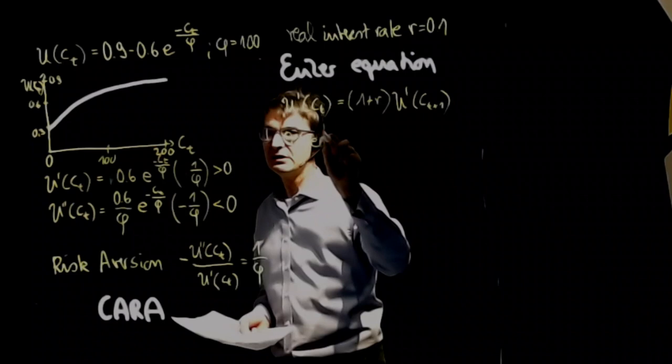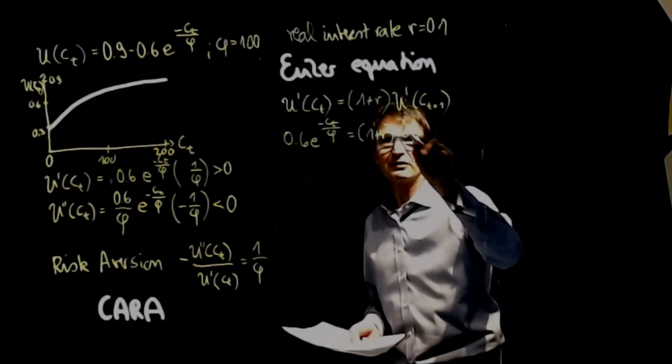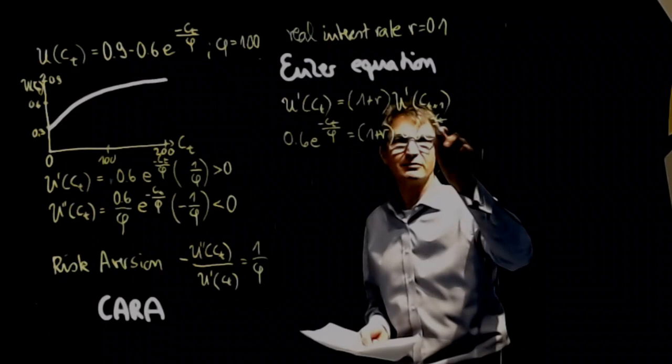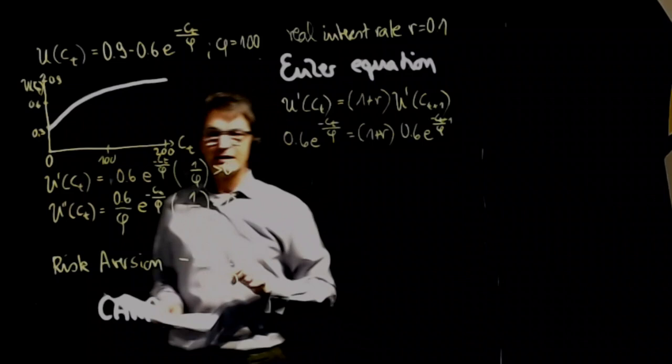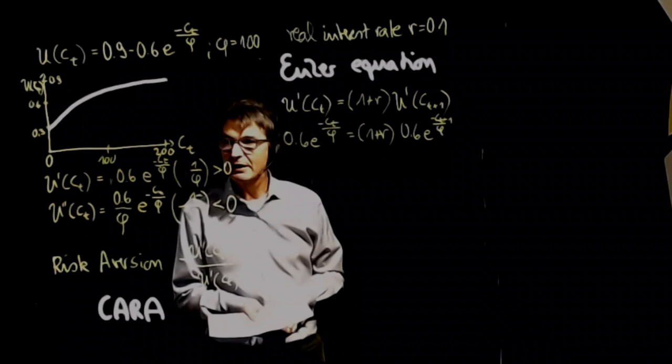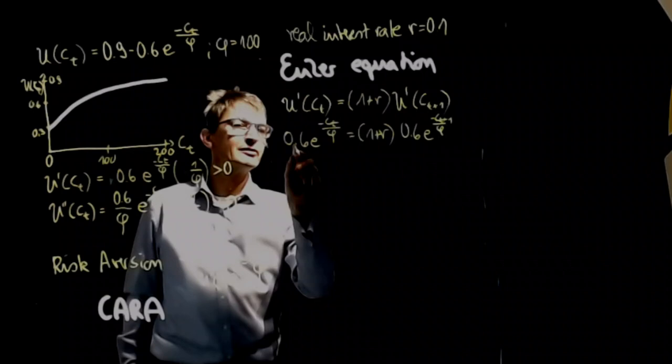For the first derivative we have 0.6 times e to the power of minus C_T over phi, and here it is C_T plus 1 over phi. Now that looks complicated. And in order to deal with this, I made an error. Have you spotted my error? I forgot about the phi here. So this is 0.6 over phi.